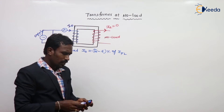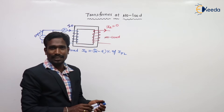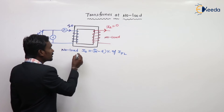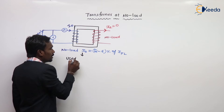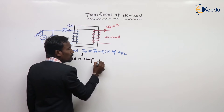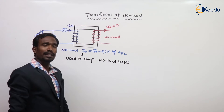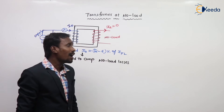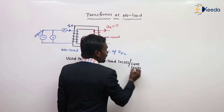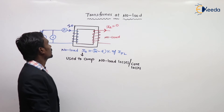This is important. Why does this no load current exist? In general, the transformer should not draw current, but here the transformer draws a small current. This no load current is used to compensate the no load losses, or core losses, of the transformer. This is my no load current I0, with a value around 2 to 6% of full load current.